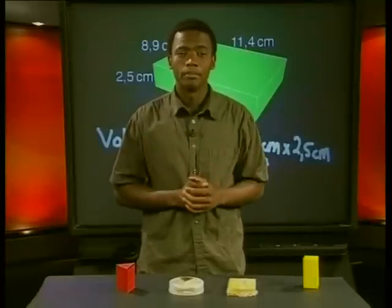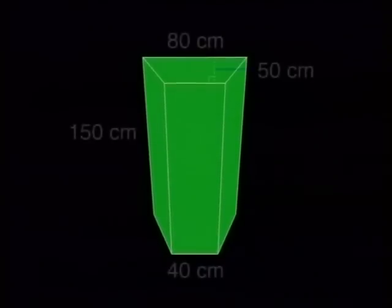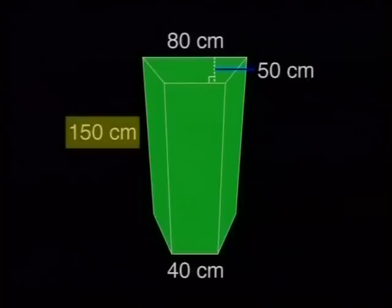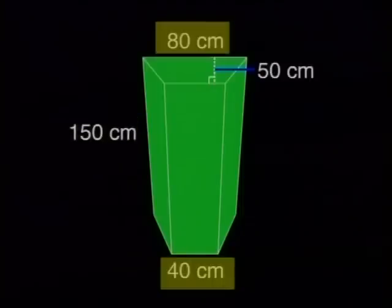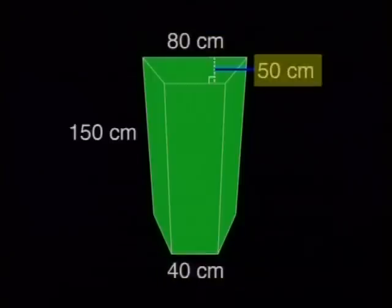Now let's look at another right prism. What is the shape of the base of this prism? It is a trapezium. We call this prism a right trapezoidal prism. We can see that the prism has a height of 150 centimeters. We can also see the dimensions of the base trapezium. Its parallel sides measure 80 centimeters and 40 centimeters, and its perpendicular height is 50 centimeters.